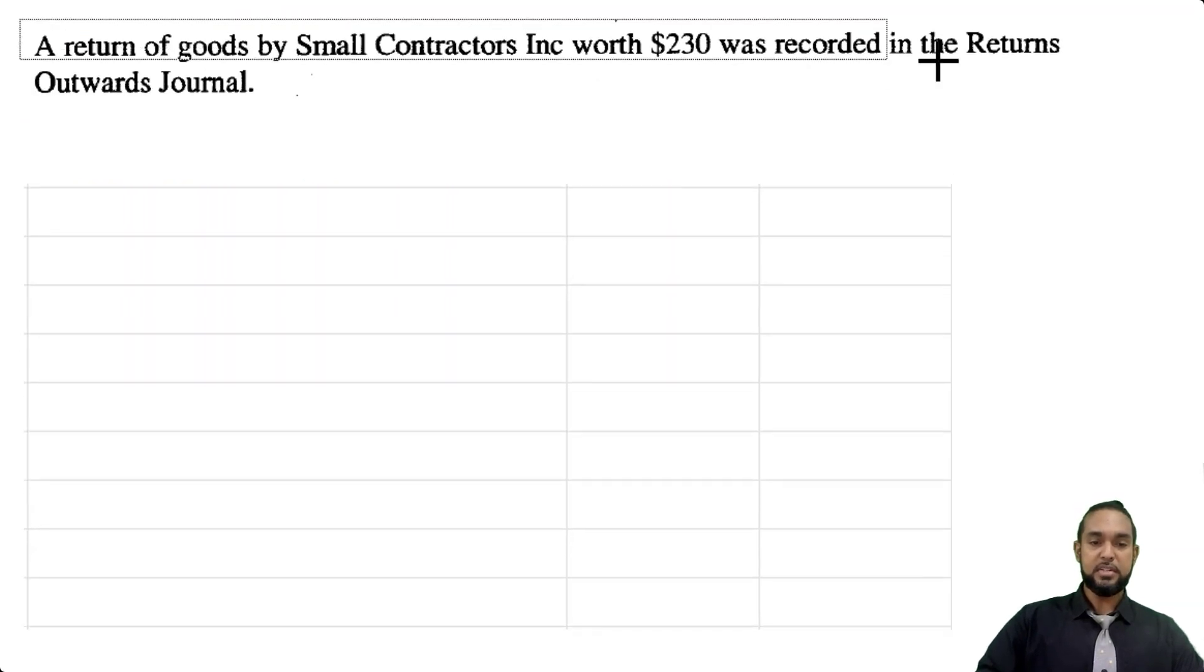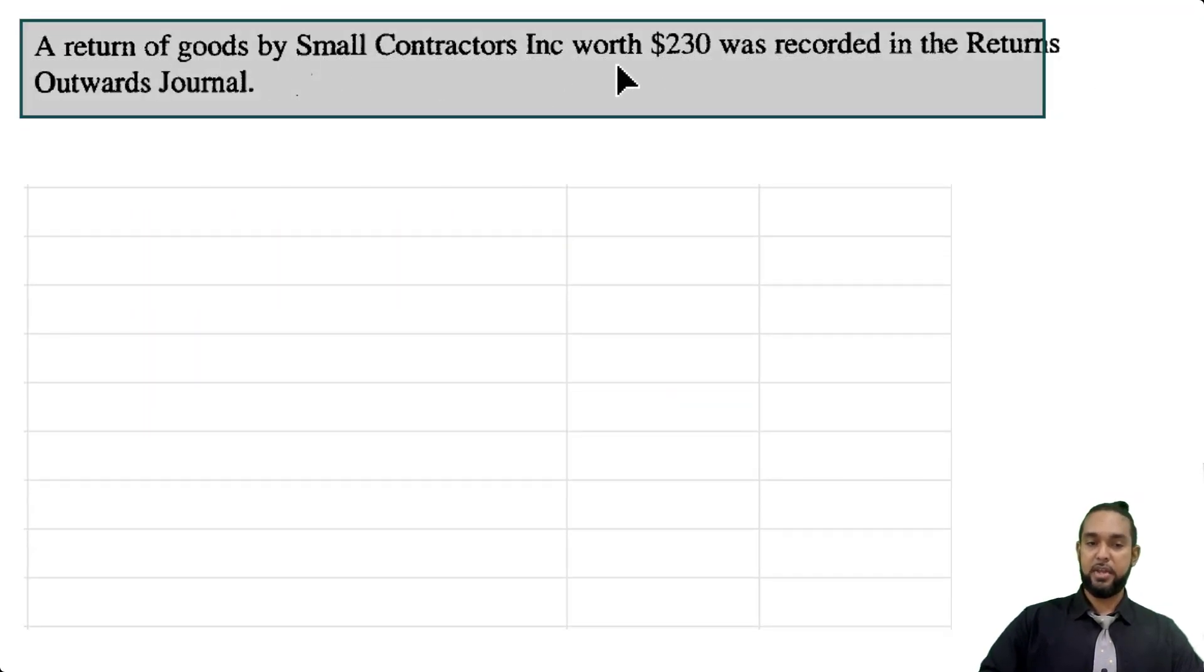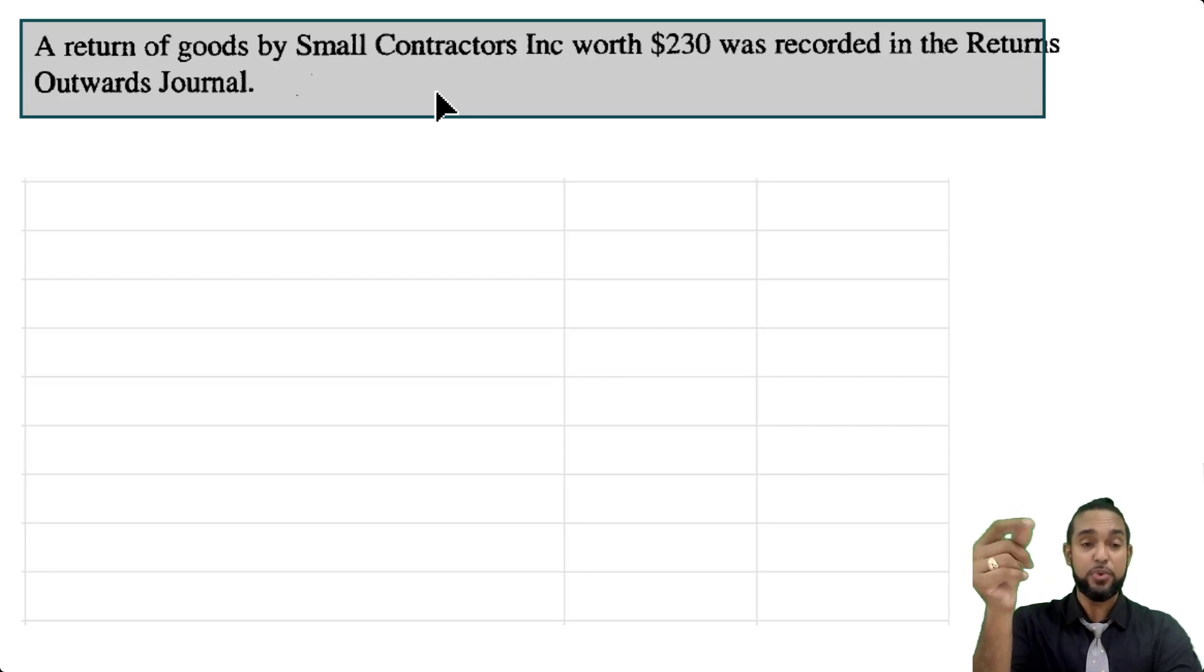Okay. Item two. It says a return of goods by small contractors, Inc. worth $230 was recorded in the returns outwards journal. So if they send back goods, so we are gift back, right? Small contractors is returning to us. That's a returns in. If we put it in the returns outwards journal, it means we put it in the returns outwards account when the total from the journal was posted to the T account in the general ledger, which means returns outwards is too high. And it also means returns in was too low. It's missing that figure of 230.